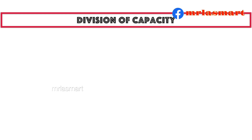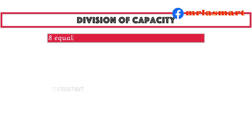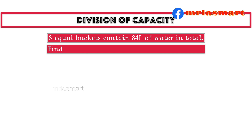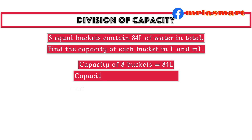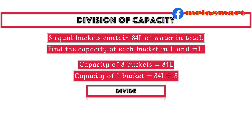Division of capacity. 8 equal buckets contain 84 liters of water in total. Find the capacity of each bucket in liters and milliliters. Capacity of 8 buckets equals 84 liters. Capacity of 1 bucket equals 84 liters divided by 8.